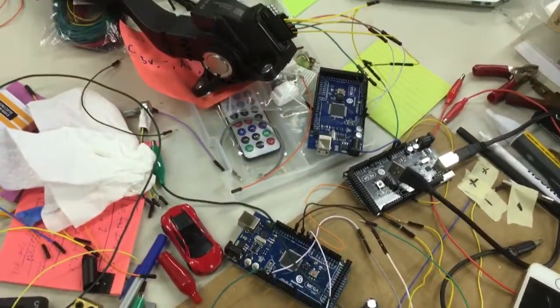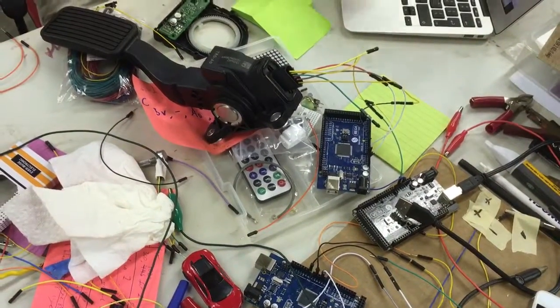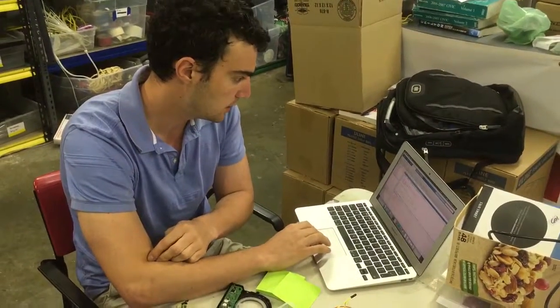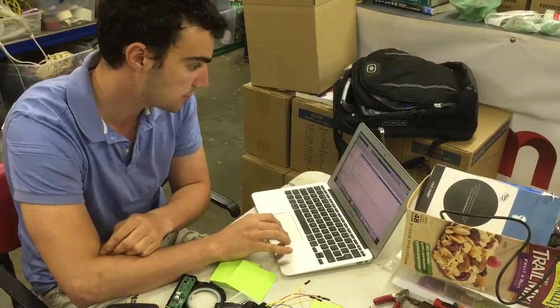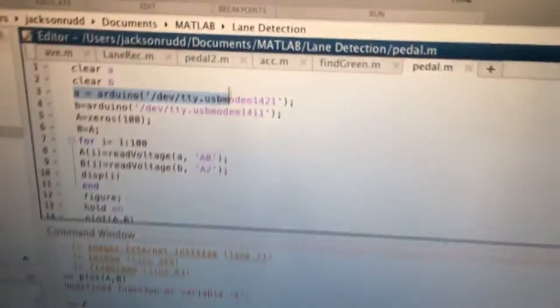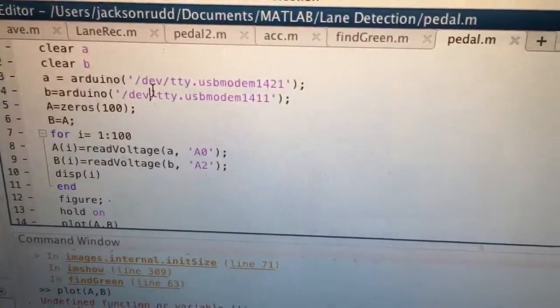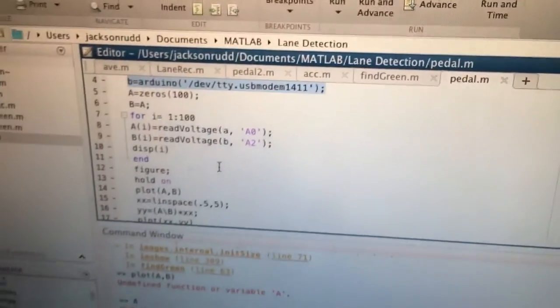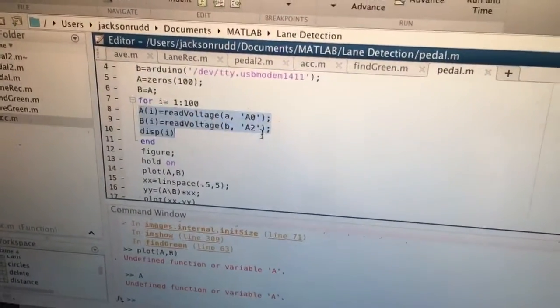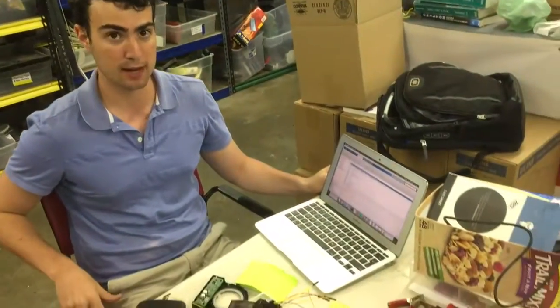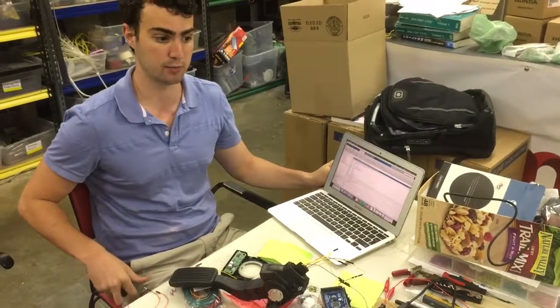In MATLAB, what I had to do is I had to learn what ports they were coming out of. Here's my code—it's my dangerous pedal code, which I shouldn't even still have open. A equals Arduino, and this is the first port. B equals Arduino, and this is the second port. After that, MATLAB has it so it's really easy to specify within these functions which Arduino you're talking to. Highly recommend doing Arduino through MATLAB instead of through Arduino IDE, because Arduino's software is kind of weird.